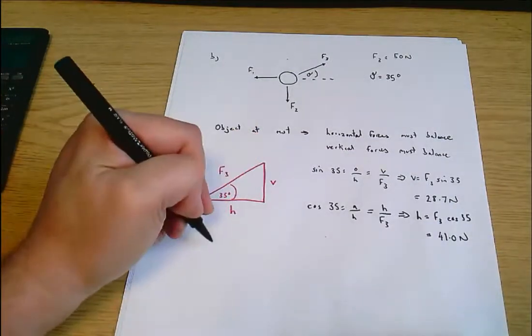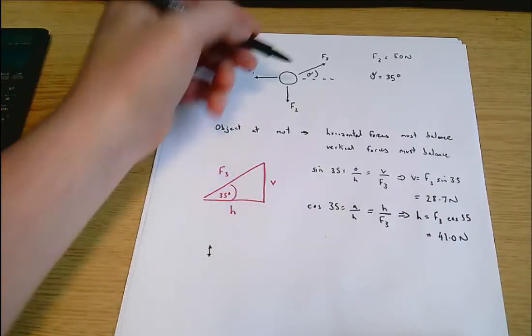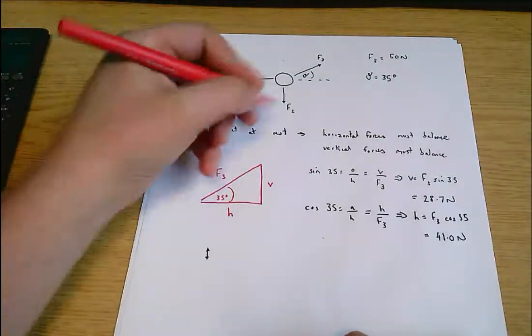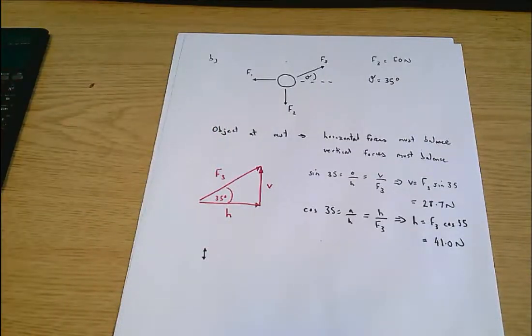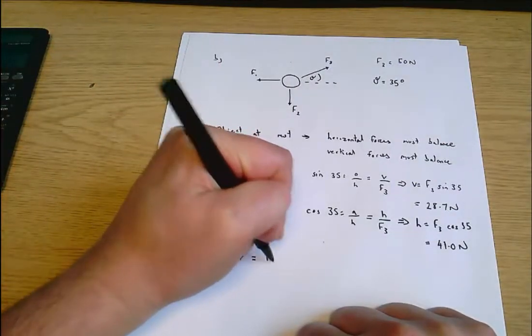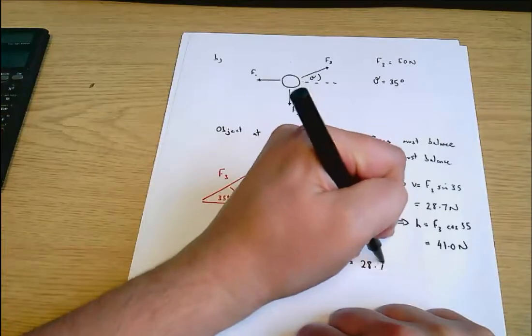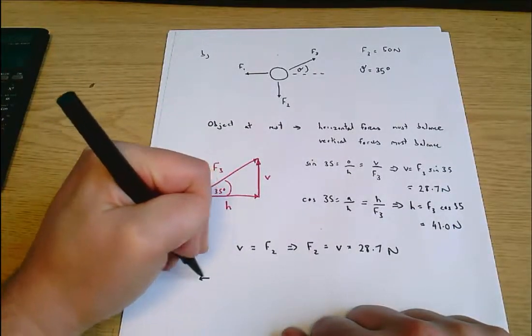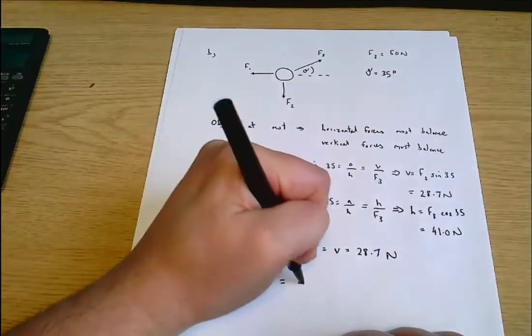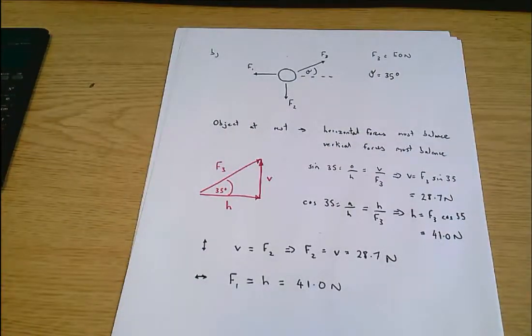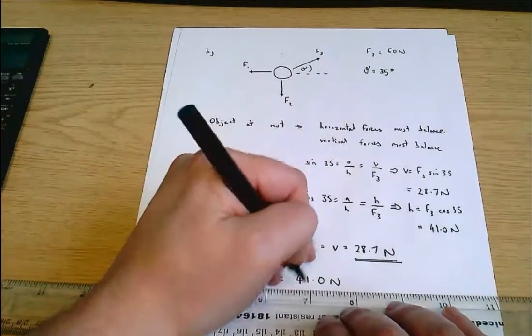Now what we have to do is say vertical equilibrium tells us forces acting up must equal forces acting down. V is a force acting upwards and F2 is a force acting downwards and they have to be equal. So F2 equals V, which equals 28.7 newtons. And looking at horizontal equilibrium, forces to the left have to equal forces to the right. So F1 equals H, which equals 41.0 newtons. Those are your answers. F2 equals 28.7 newtons and F1 equals 41.0 newtons.